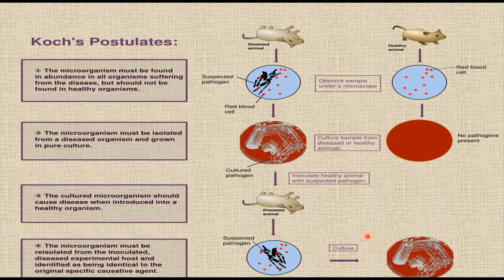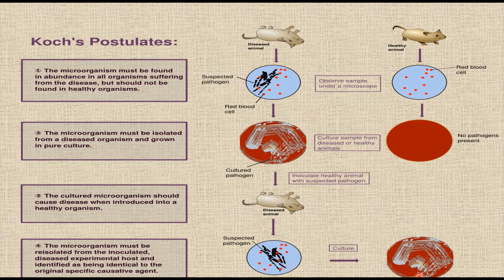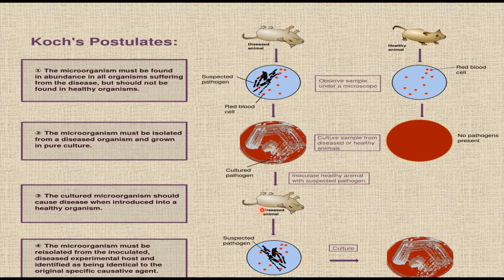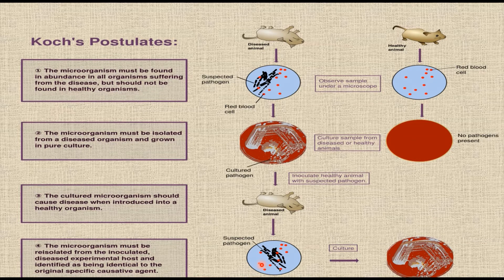Very soon Koch observed the multiplication of the bacteria and found that these bacilli are able to produce spore formation. He then transferred these spores to a fresh medium and saw them germinate into vegetative cells. To further prove the role of bacteria in disease, he injected the spores into mice and saw them become victims of the disease. Examination of the dead mice again showed bacilli in their blood.